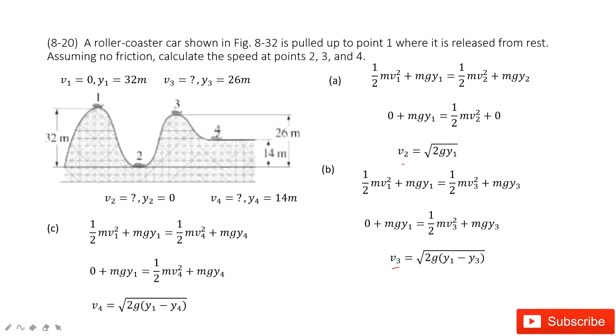Now for position 4, the energy is still conserved. The initial energy equals the final energy at position 4. We input the known quantities, v1 equals 0, and then v4 can be found from this equation.